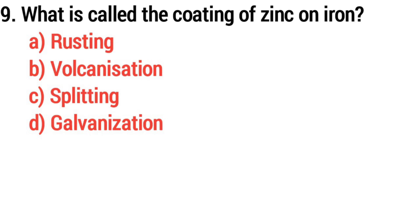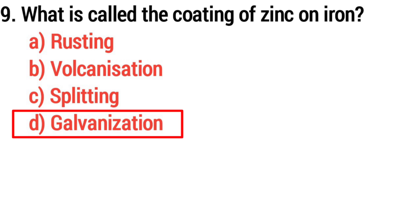Q9. What is called the coating of zinc on iron? Answer, option D: Galvanization.